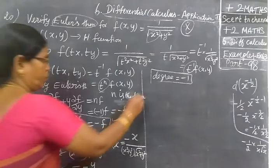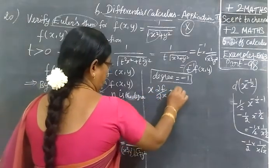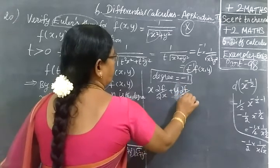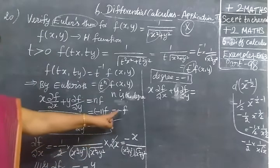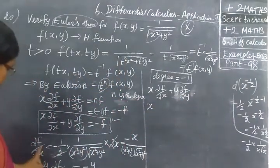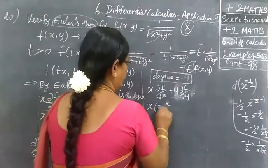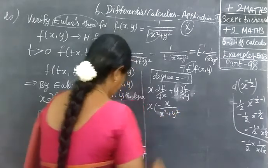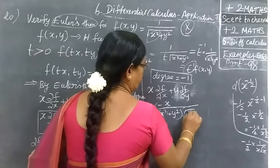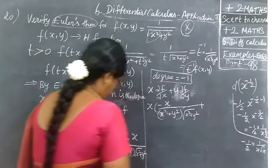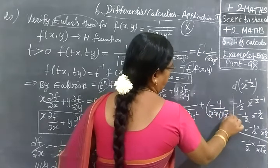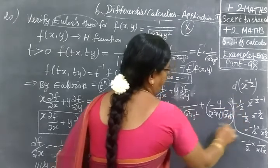Now we will have to add x(∂f/∂x) + y(∂f/∂y). So now you substitute. x as it is you write, ∂f/∂x you are writing -x/(x²+y²)√(x²+y²), then plus.